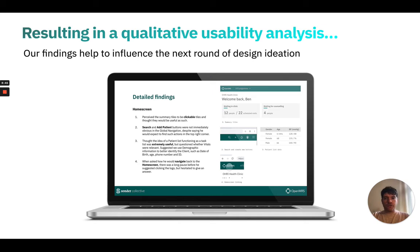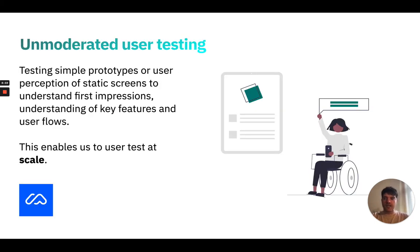The results will be in the form of observation notes. Here's an example of some of those notes collected during our HTS user testing — this will then influence the next round of design ideation. The other way that we can test, a new tool that we've just started to utilize for unmoderated testing, is called Maze, and this allows us to test simpler prototypes but also static screens and images.